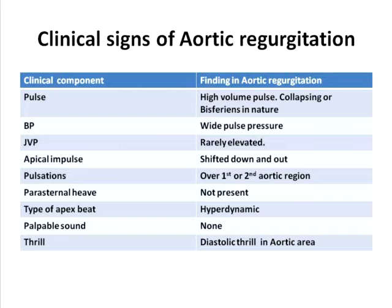JVP is rarely elevated because the left ventricle accommodates well for the increase in volume, and it can be elevated only when the heart fails terminally. The apical impulse is shifted down and out due to dilatation of the left ventricle. Pulsations can be seen over the first or second aortic region due to the large volume of blood transferring across the aorta. Parasternal heave is not present, and the type of apex appreciated is the hyperdynamic apex.